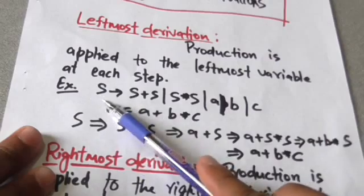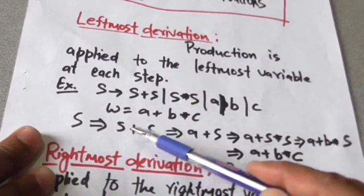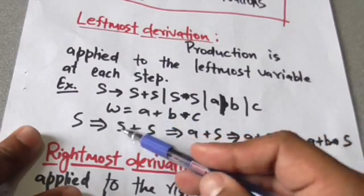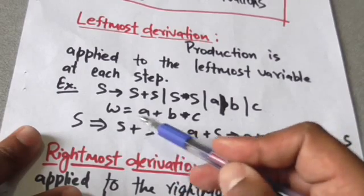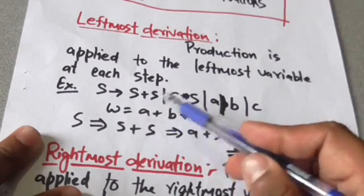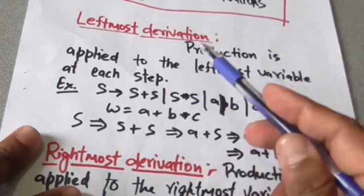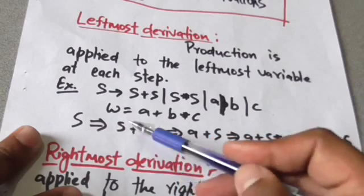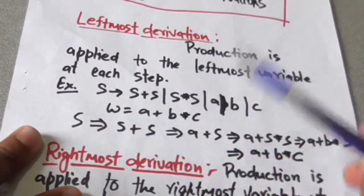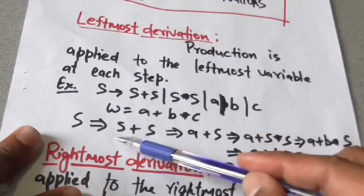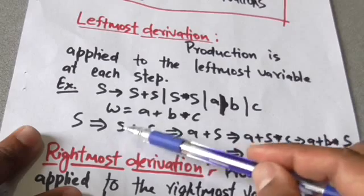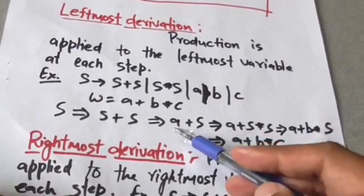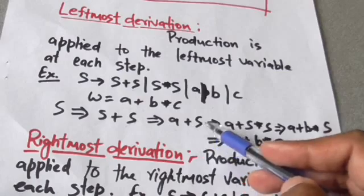We have to find its leftmost derivation, starting from S. Here I have applied the production rule S derives S plus S, so S is replaced by S plus S. Now in this string we have two variables S and S. Since it is the leftmost derivation, we will apply the production rule to the leftmost variable. I have applied the production rule S derives a, so this leftmost S is replaced by a.